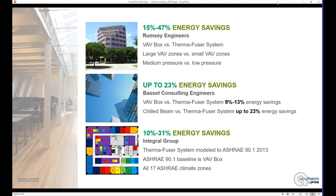The last study on the screen is a more recent study done to the latest ASHRAE standards. It was compared across all 17 ASHRAE climate zones, and it was a Thermafuser system model against the ASHRAE 90.1 energy standard. The baseline is basically an efficient version of a VAV box type system. Just depending on the climate zone, anywhere from 10% to 31% more energy efficient for the Thermafuser diffuser system.